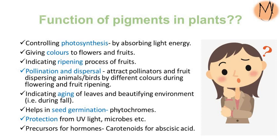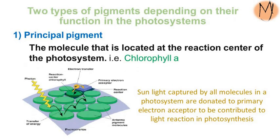Pigments also indicate aging of leaves and beautify the environment as mentioned before. Further, phytochrome-like pigments help seed germination. Some pigments can protect us and plants from UV light as they can absorb it. Also, some pigments have antimicrobial properties or can repel microbes. Some pigments are precursors for hormones — for instance, carotenoids are a precursor for abscisic acid biosynthesis.